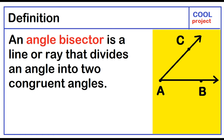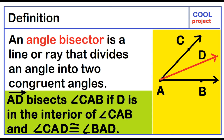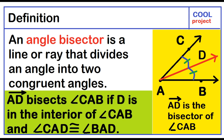An angle bisector is a line or ray that divides an angle into two congruent angles. Ray AD bisects angle CAB if D is in the interior of angle CAB and angle CAD is congruent to angle DAB. Ray AD is the bisector of angle CAB.